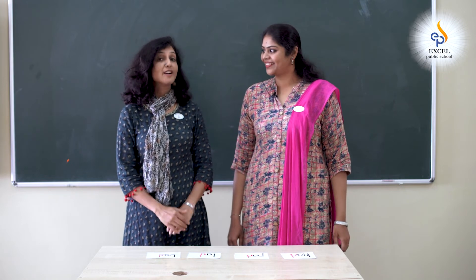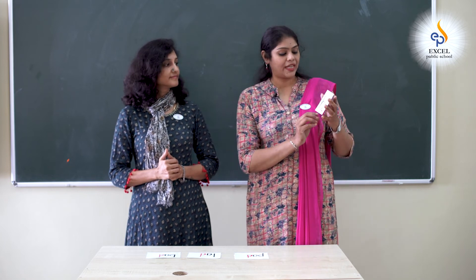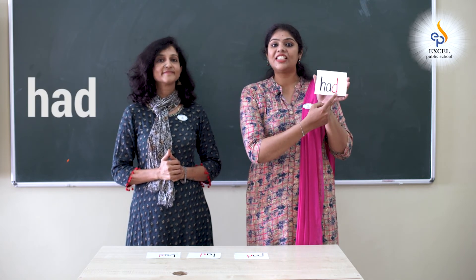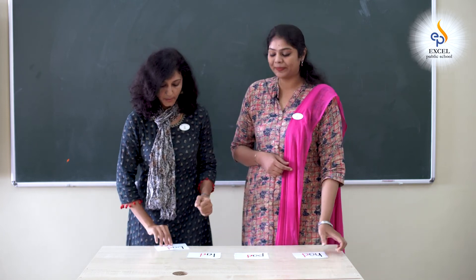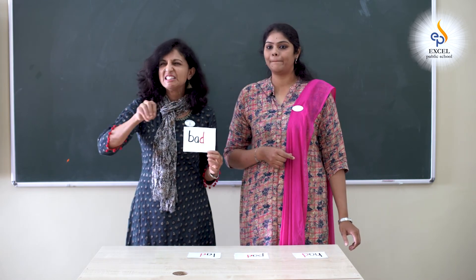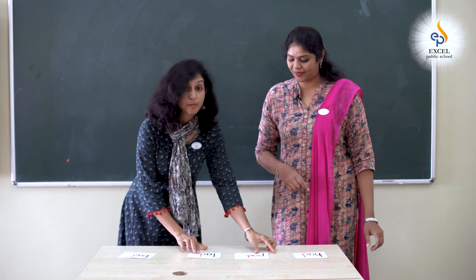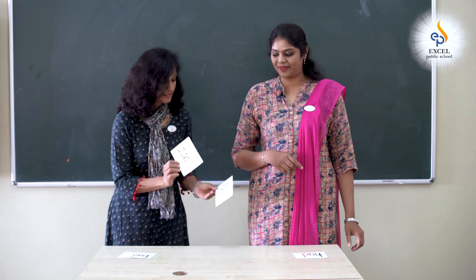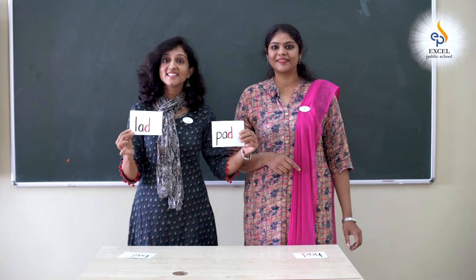Jocelyn, let's make a few sentences using these words. Okay, let's try. Let me see which is the first word I pick up. It's had. I had my breakfast. That's a good one. I have this card and it reads bad. It's bad to litter. There are two more cards left. Lad. Pad. The lad has a pad.